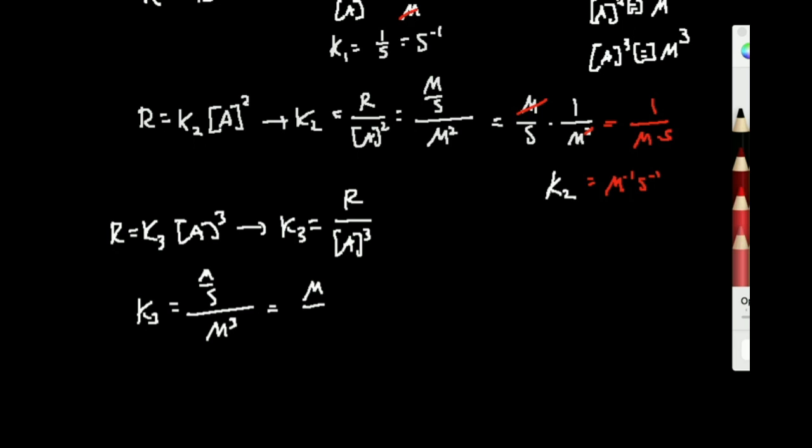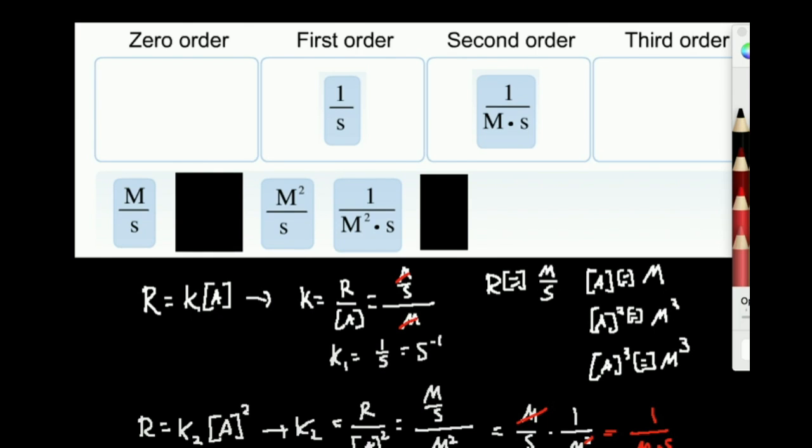Now remember, if you take molar per second divided by M cubed, that's the same thing as multiplying by the reciprocal of M cubed, or times 1 over M cubed. And notice that this M cancels the one factor here, leaving M squared. This is going to be expressed as molar inverse squared times second inverse. So either one of these will work for units of a third order rate constant. And so I'm looking for 1 over M squared, 1 over M squared per second. That's a third order rate constant.